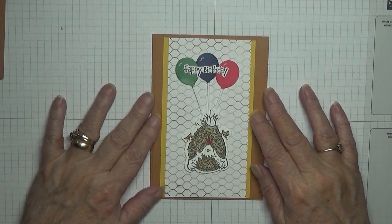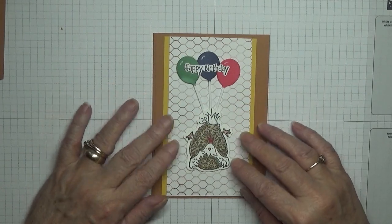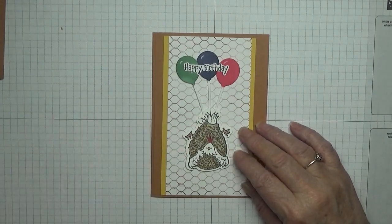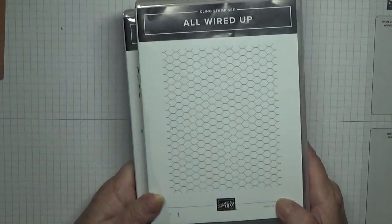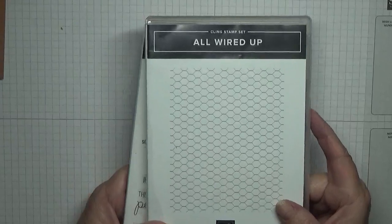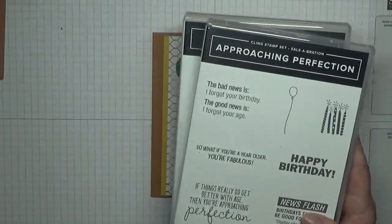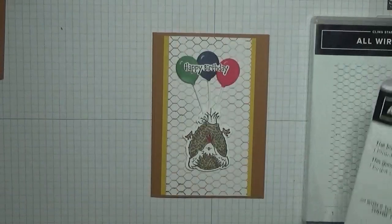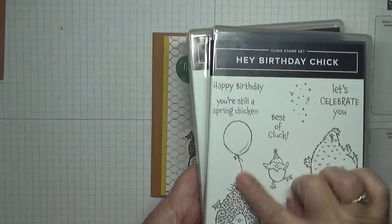Hello, welcome back to Georgie B's cards and stuff. Today I'd like to show you how I made this card. I made this card using two new stamp sets to me, one is All Wired Up, the chicken wire, and the other one is Hey Birthday Chick with this chick here and the happy birthday.